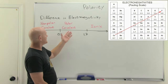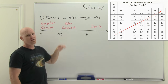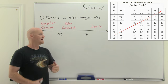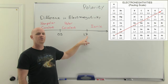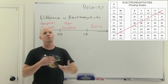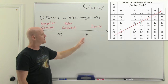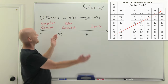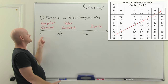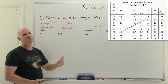If we look at electronegativity — I've put the Pauling scale up on your screen — the way it works is the bigger the difference in electronegativity, the more polar a bond gets. If that difference reaches 1.7 or greater, it's become so polar we call it ionic. A difference less than 1.7 is covalent. In the range of 0.5 to 1.7, that's a polar covalent bond. Anything less than 0.5 we call non-polar or pure covalent.